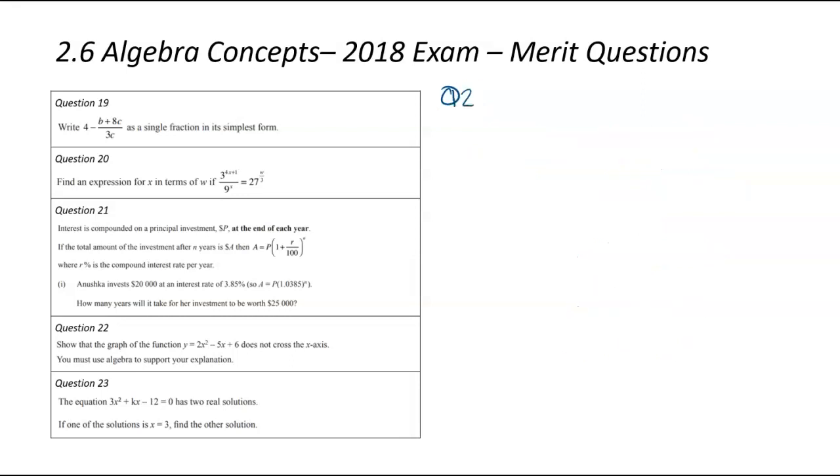And we are now looking at question number 20. We've been asked to find an expression for 4x from all of that mess over there. So let's start by writing that equation down. So we've got 3^(4x+1) divided by 9^x equals 27^(w/3). So the first thing I've noticed in this question, all the base numbers are powers of 3. So what I'm going to do is change the 9 and the 27 to be a power of 3.